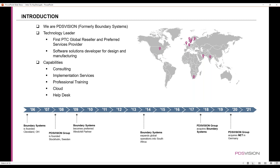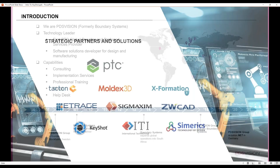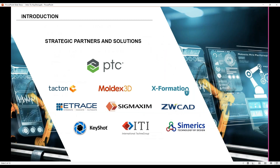Around 2009, Boundary became a preferred Windchill partner, and then we expanded between 2013 and 2014 into South Africa. Around 2017 and 2018, PDS Vision Group acquired us. And more recently, between 2019 and 2020, PDS Vision Group acquired NET in Germany. Software solutions we provide include the PTC Software Suite, Moldex 3D, Tacton, X-Formation, Etraj, Sigmaxim, Keyshot — which we'll talk about today — ITI, and Sumerix.